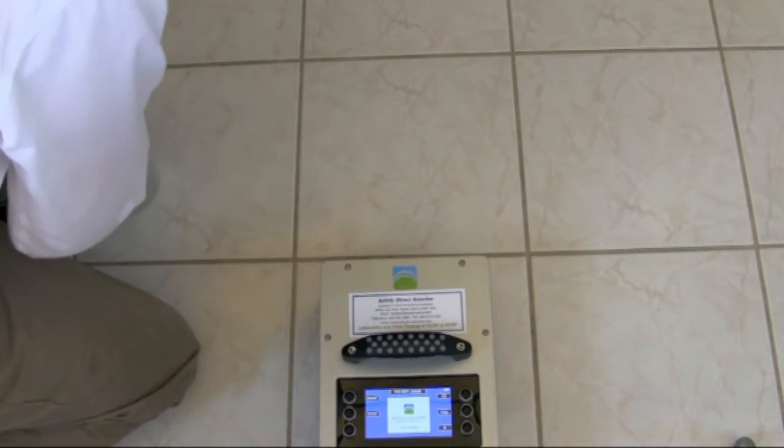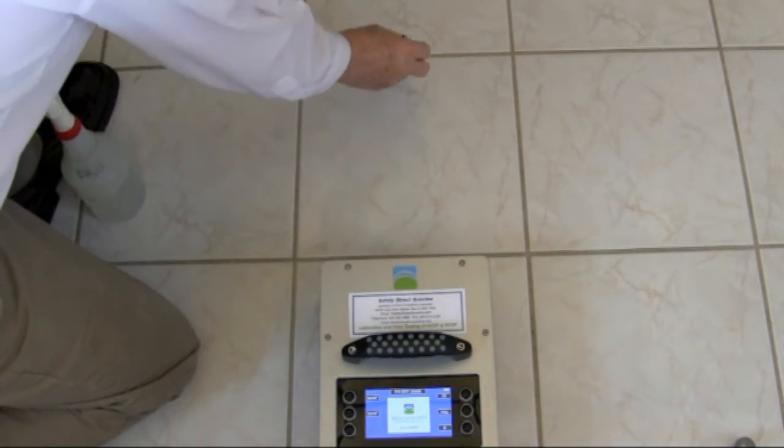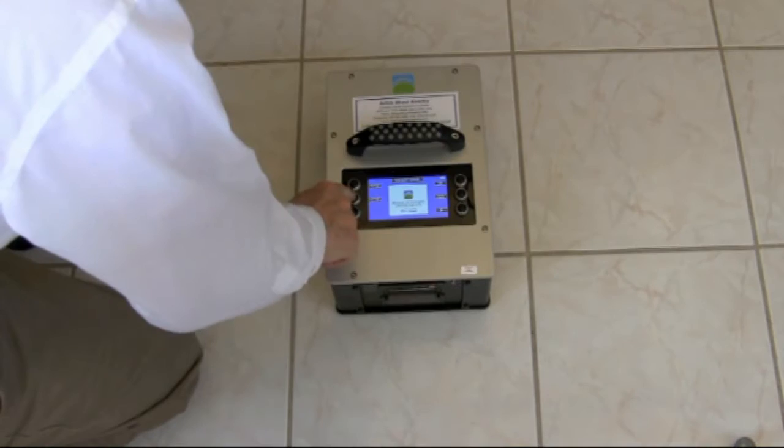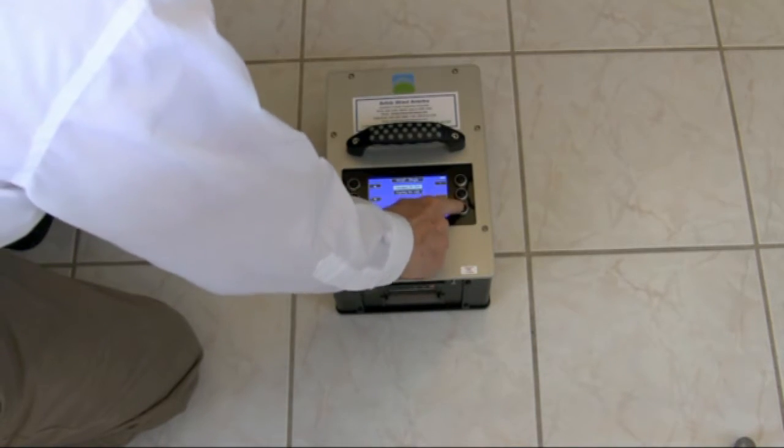When conducting a wet test, we wet the area to be tested. In this case, we'll conduct a static coefficient of friction test, so we'll press the SCOF button and then hit go.